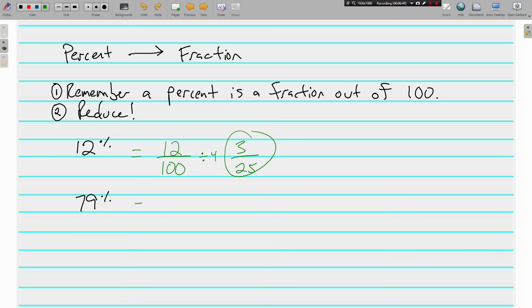And 79 percent. Again, it's a percent, which means it's out of 100. And I don't think there's anything that goes into 79 and 100, except for 1. I believe 79 is a prime number. So we're all done.